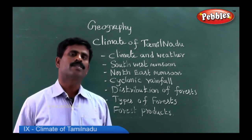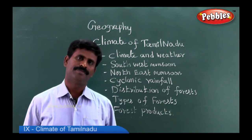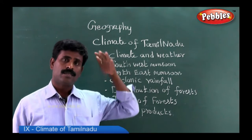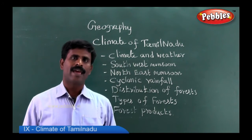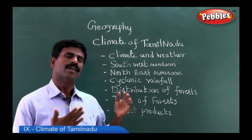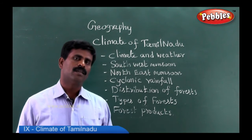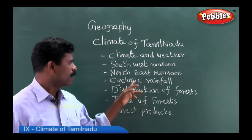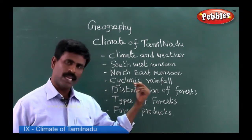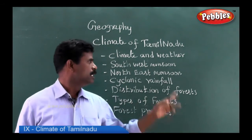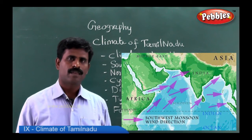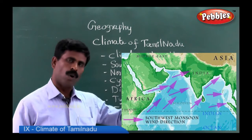Generally, Tamil Nadu has a tropical hot climate. The sun comes twice vertically over Tamil Nadu, and May is the hottest month while January is the coldest month. The rainy season of Tamil Nadu is divided into three: the southwest monsoon, northeast monsoon, and cyclonic rainfall. The southwest monsoon occurs between June and September.